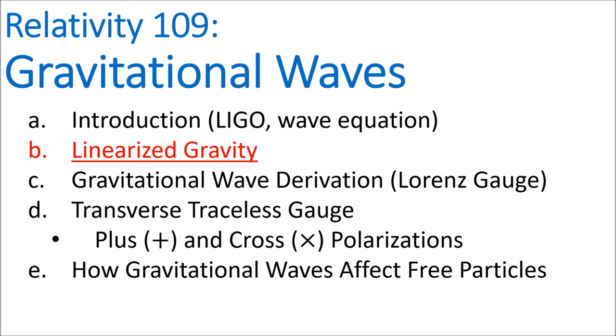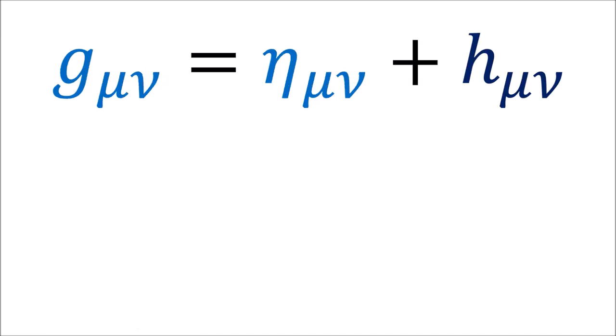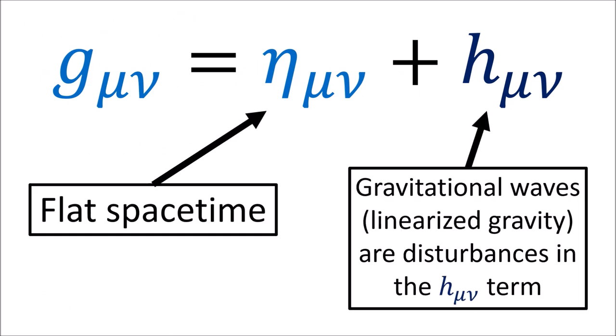In this video, we're going to start the mathematical derivation of gravitational waves by talking about linearized gravity, which is when we approximate the spacetime metric g as the flat Minkowski metric eta plus a small change h, where the components of h are much smaller than the components of eta, meaning they are much smaller than 1 in Cartesian coordinates. Over the next few videos, we'll see that gravitational waves are disturbances in this h term, so gravitational waves are essentially small vibrations in the metric deviating away from flat spacetime.